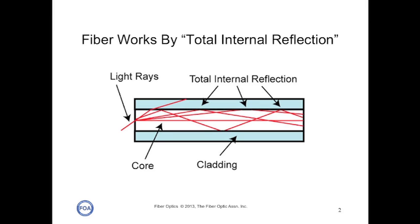Optical fiber works by total internal reflection. The light rays traveling down the core are reflected back by the interface between the higher index of refraction of the core and the lower index of refraction of the cladding.